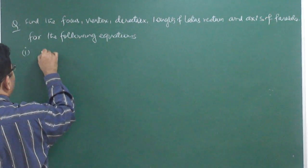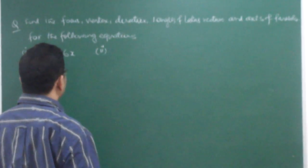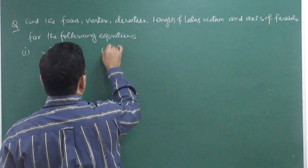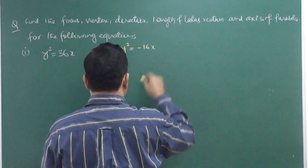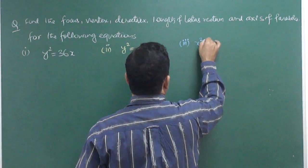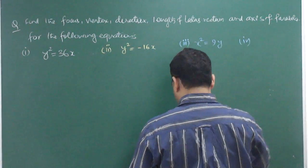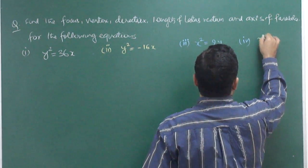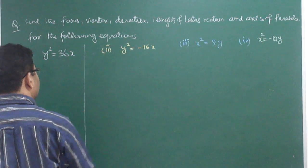Here are the four questions we will discuss today. First: y² = 36x. Second: y² = −16x. Third: x² = 9y. And fourth: x² = −12y. These are the four questions we will discuss today.